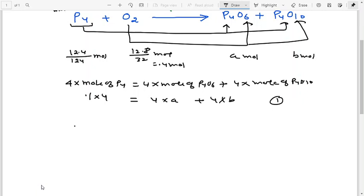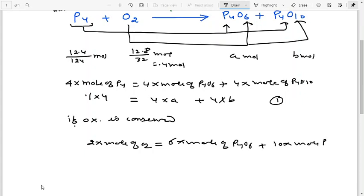If oxygen is conserved, then 2 times moles of O2 equals 6 times moles of P4O6 plus 10 times moles of P4O10. So 2 times 0.4 equals 6a plus 10b.